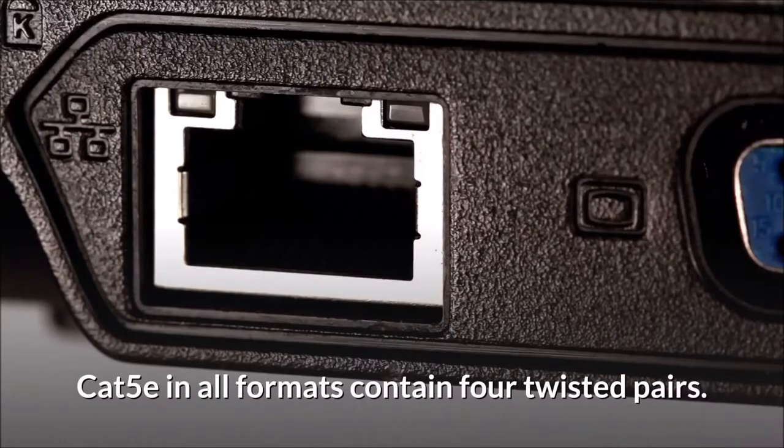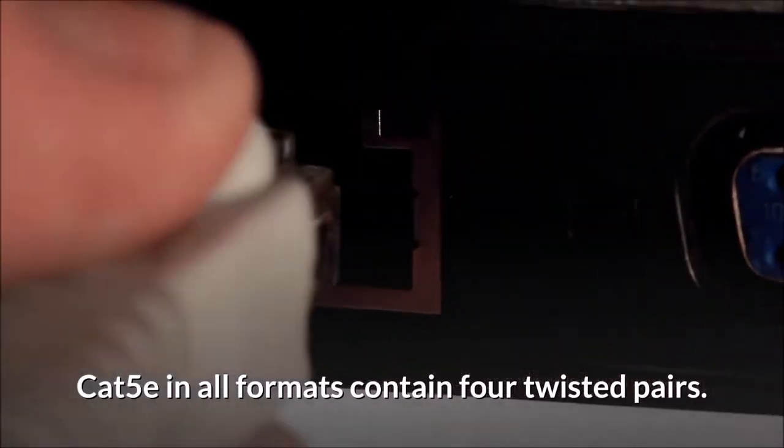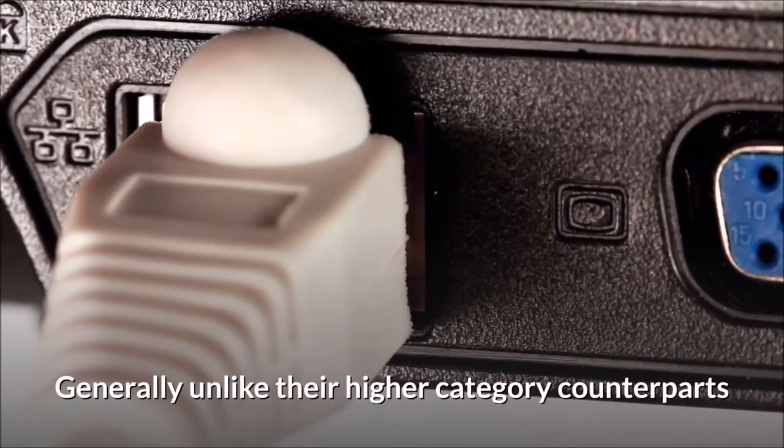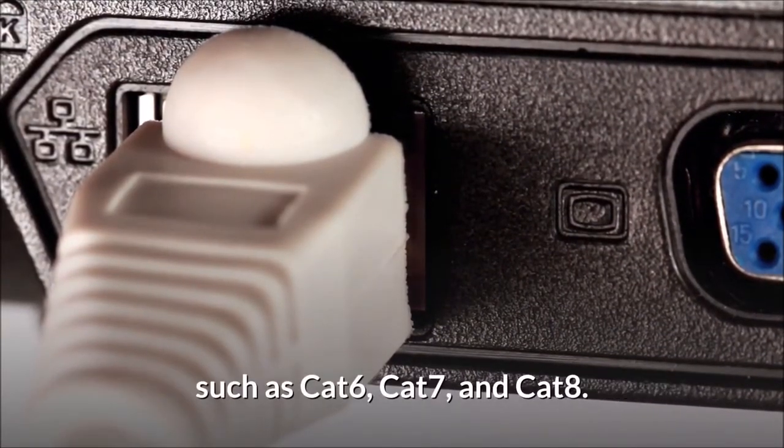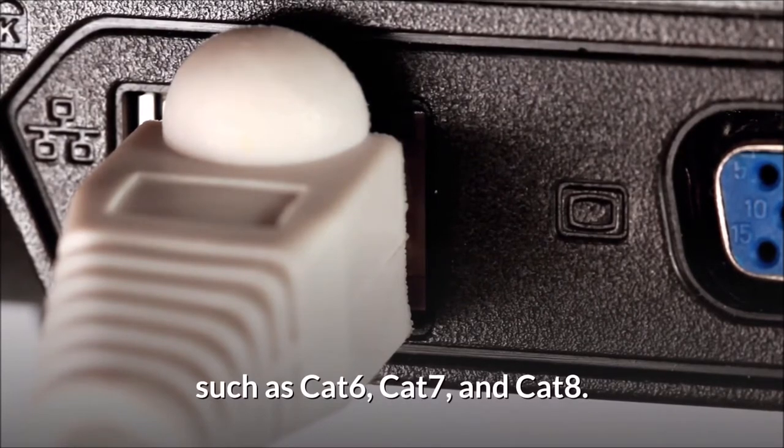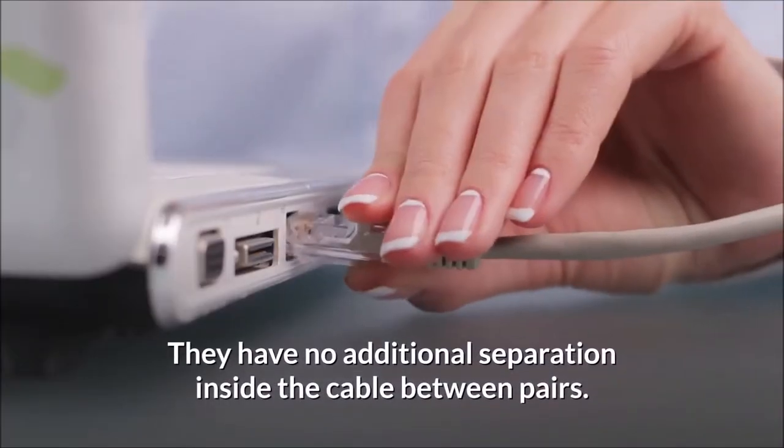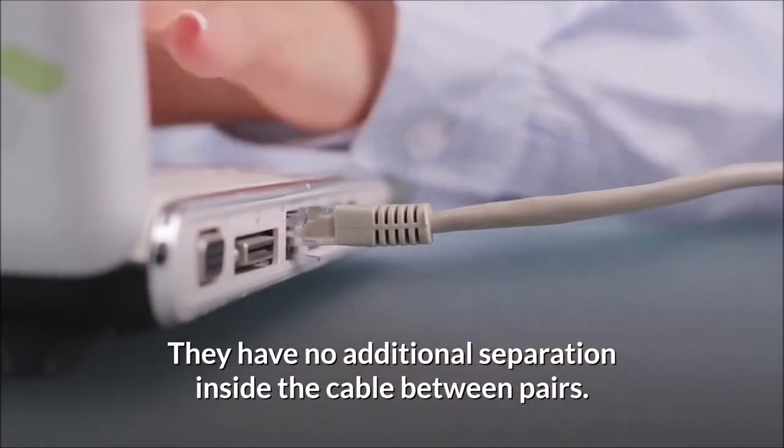Cat 5e in all formats contain 4 twisted pairs. Generally, unlike their higher category counterparts such as Cat 6, Cat 7, and Cat 8, they have no additional separation inside the cable between pairs.